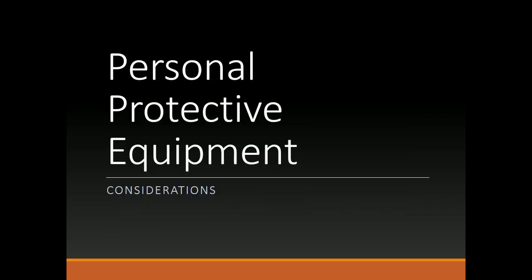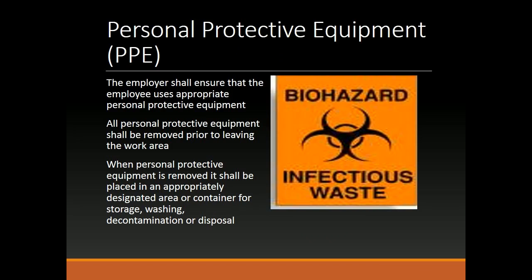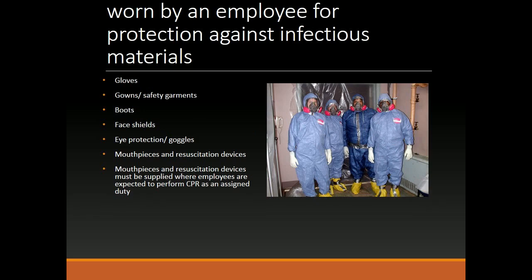Personal Protective Equipment — Considerations. Engineering and work practice controls should be the first line of defense in keeping workers safe. When occupational exposure remains after engineering and work practice controls are put into place, personal protective equipment must be used. Be sure to go over all personal protective equipment including how to use it, when to use it, and how to access it. The employer shall ensure that the employee uses appropriate personal protective equipment. All PPE shall be removed prior to leaving the work area and placed in an appropriately designated area or container for storage, washing, decontamination, or disposal.